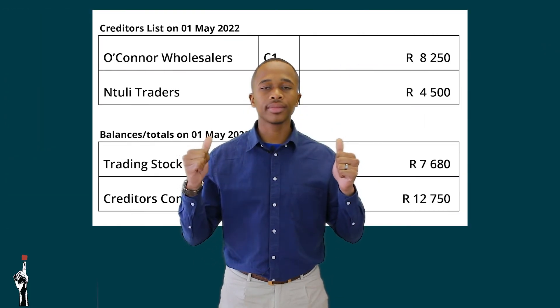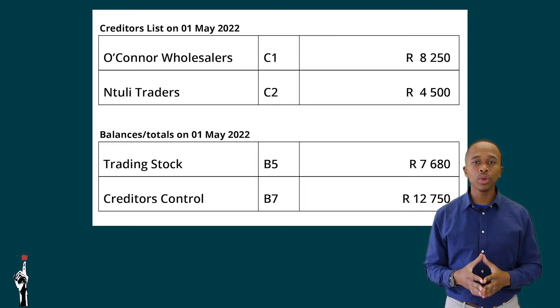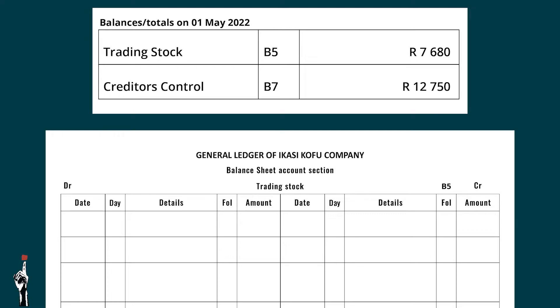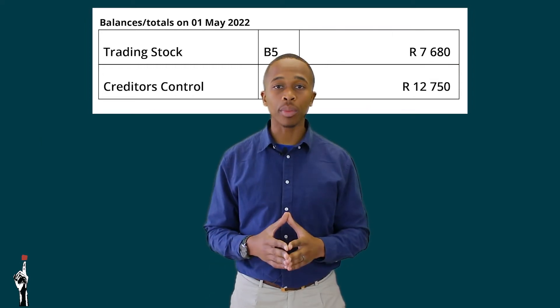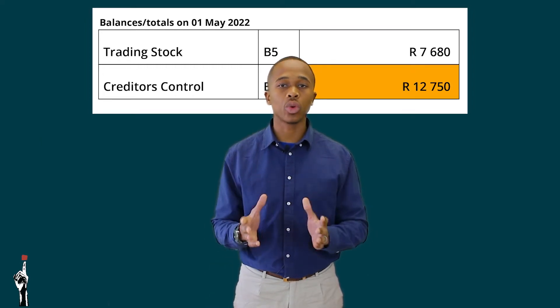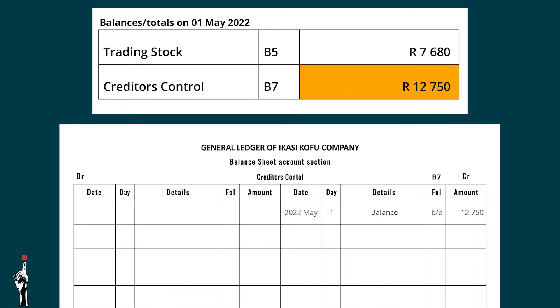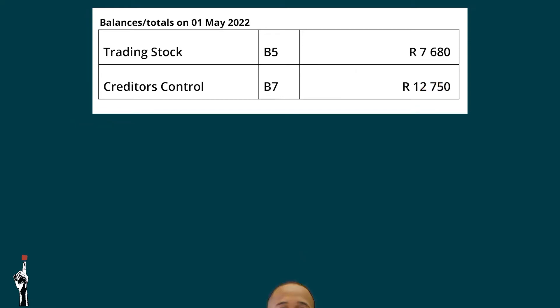Remember, we always start with the balances on the first of the month. Let's record the balances together. Starting with the general ledger, the first account is trading stock with a balance of R7,680. Next is creditors control — its balance is R12,750.